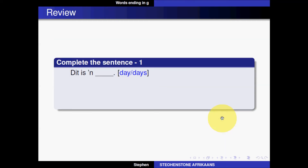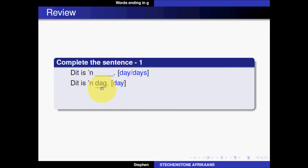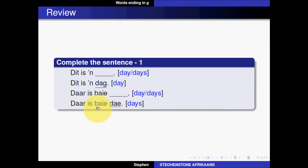The format is the same as the previous lessons — we'll look at our basic sentences and cycle through the new words. 'Dit is 'n dag.' Now I choose the singular word 'day' — 'dag.' 'Daar is baie dae.' 'Nag' — 'Dit is 'n nag.' 'Daar is baie nagte.'